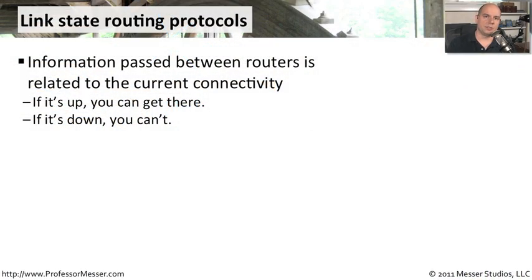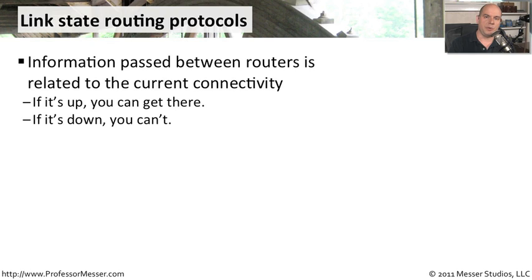Link state routing protocols are most interested in the quality of the link between point A and point B, and make routing decisions based on those particular vectors. At the most basic level, if the link is there and available, it sends the traffic down that connection. If the link is not available and you can't get there, it doesn't become part of the routing table.